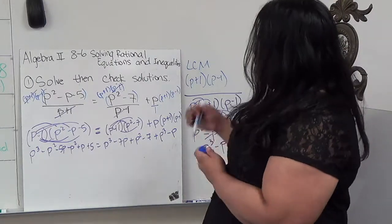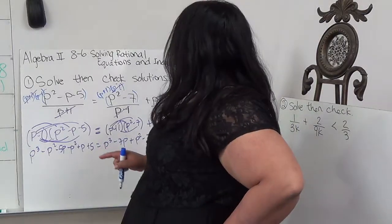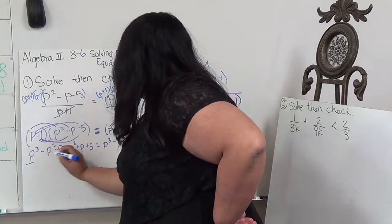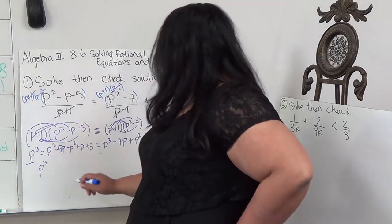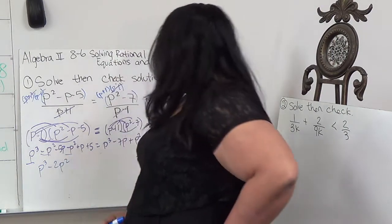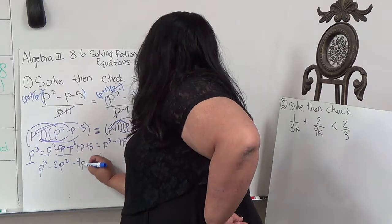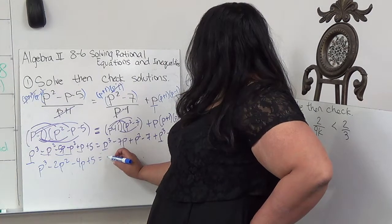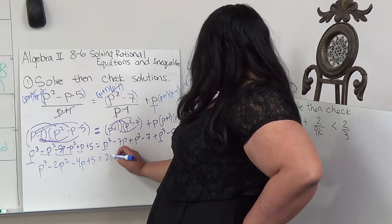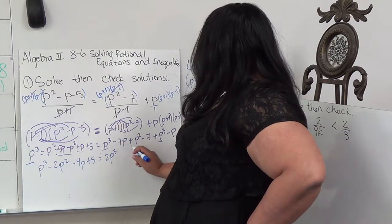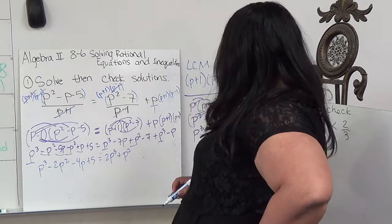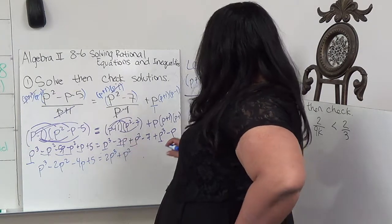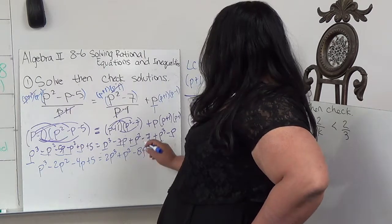Let's combine my terms on both sides and then we can shift everything to one side. So we have P³, minus P³, there's no other P³, so negative P³. Negative P squared and minus P squared gives me negative 2P². Negative 5P plus P gives me negative 4P plus 5 equals P³ plus P² minus 7P, and then negative 7.